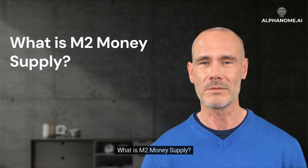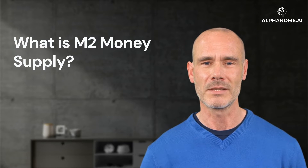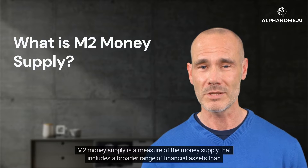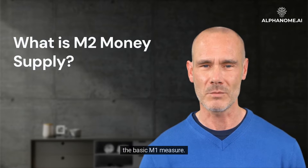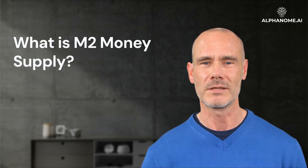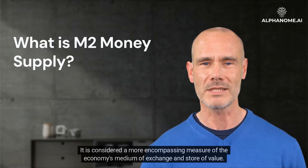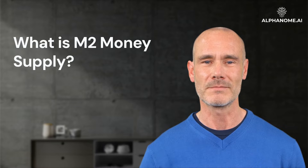What is M2 money supply? M2 money supply is a measure of the money supply that includes a broader range of financial assets than the basic M1 measure. It is considered a more encompassing measure of the economy's medium of exchange and store of value.